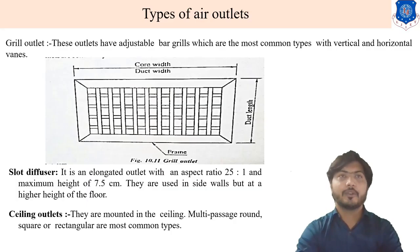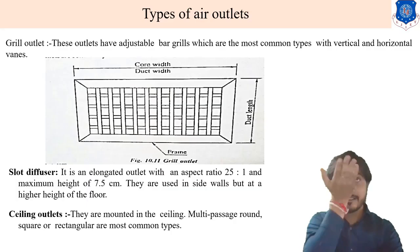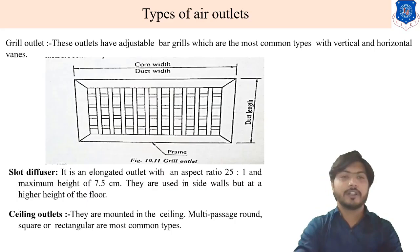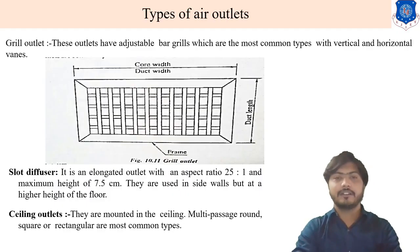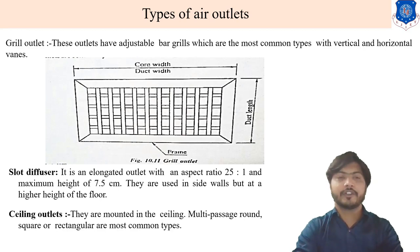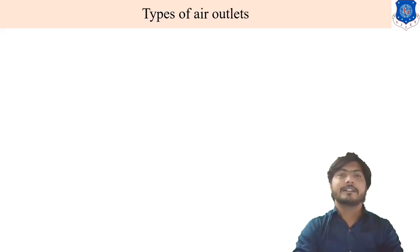Next is ceiling outlet. They are mounted on the ceiling. Multi-pass round, square, or rectangular shapes are the most common types of ceiling outlets.